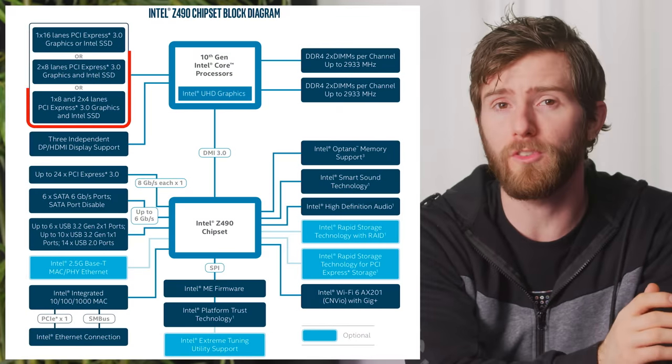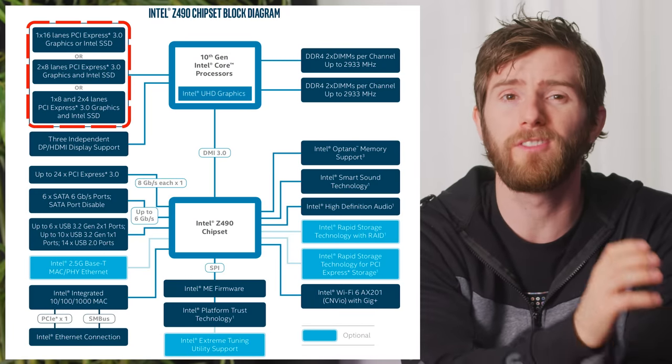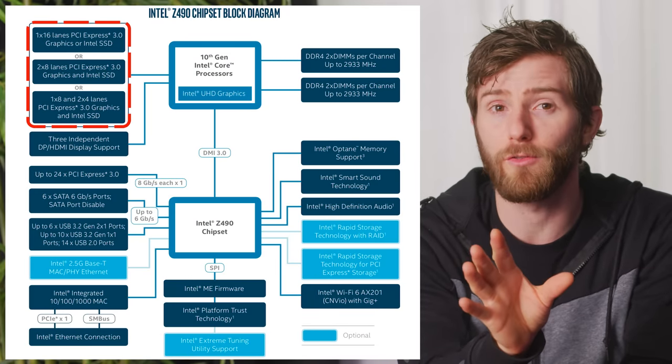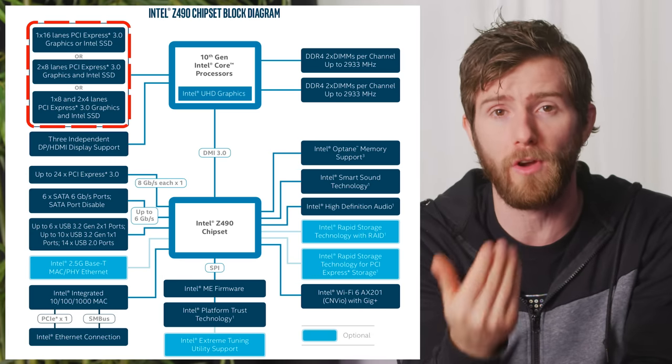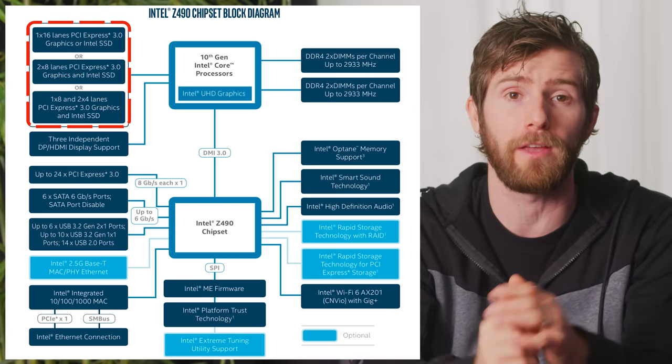Most consumer CPUs will have 16 or 20 lanes running directly off of them, which you should be using for your graphics card for the best performance. But then why is that better than using the lanes that come off the chipset? Well, one reason is that having the extra step of routing data through that chipset introduces latency, which can slow down your performance.